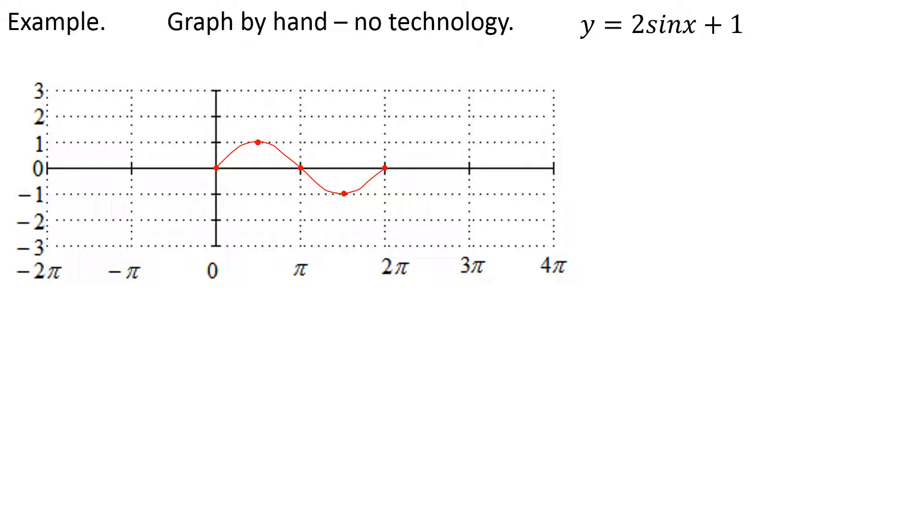Hey, there's a 2 out in front, it's 2 times the sine of x, so the amplitude is 2. The maximum will be 2, the minimum will be negative 2. The period is still just 2π however.